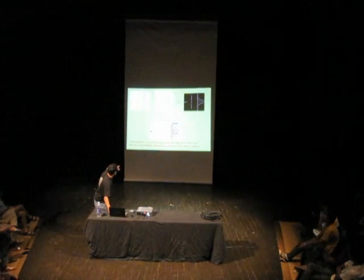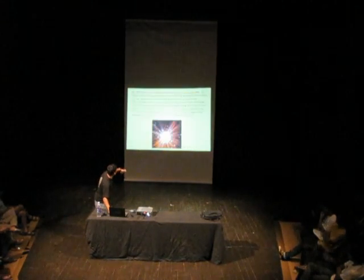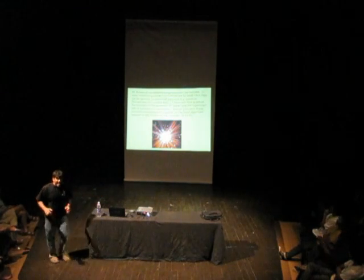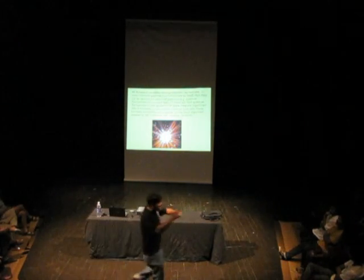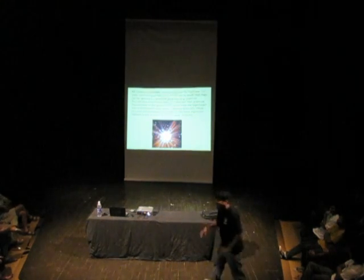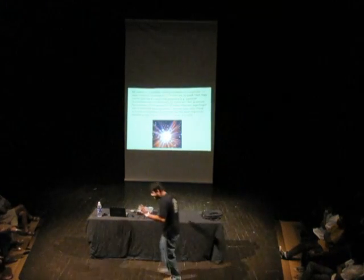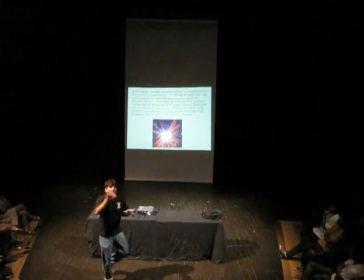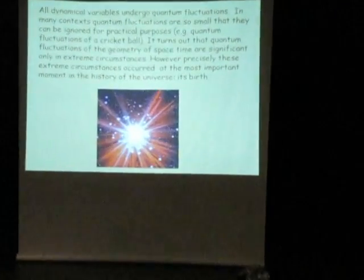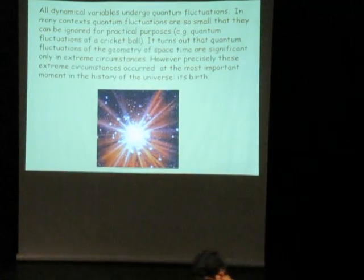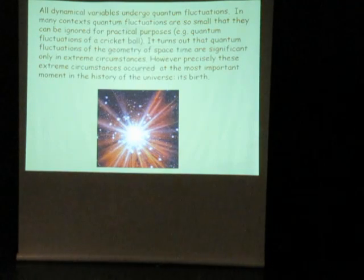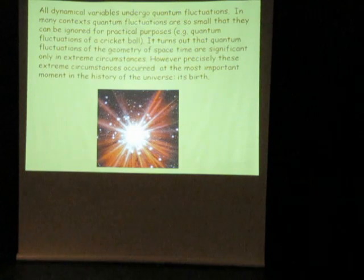The electron goes through both slits. The two possibilities interfere to give this pattern. We explain this in the context of the position of an electron. The basic fact of physics — determined by the requirement of consistency — is that any dynamical variable in the universe undergoes quantum fluctuations.